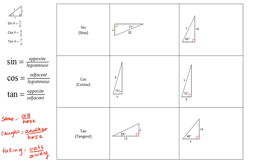When I'm trying to think of what is cosine, I still think 'caught another horse' — adjacent over hypotenuse. What is sine? 'Some old horse' — opposite over hypotenuse. Some old horse caught another horse taking oats away. Some teachers talk about SOHCAHTOA — S-O-H-C-A-H-T-O-A. I can say it when I look at it, but I always fall back on 'some old horse caught another horse taking oats away.'